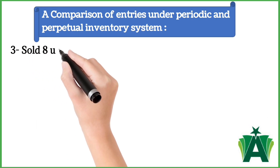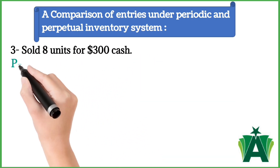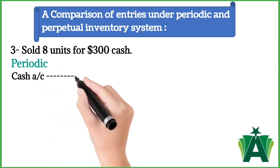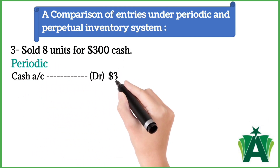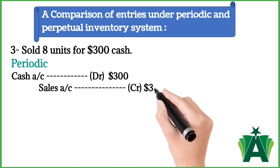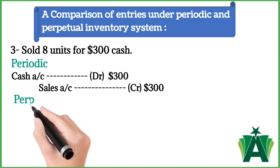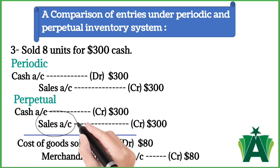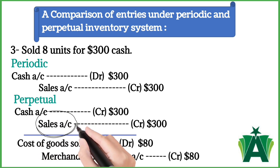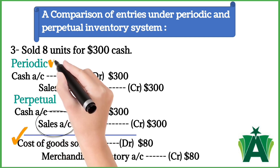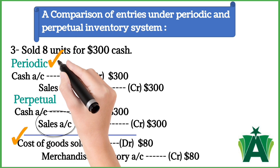Transaction 3: sold 8 units for $300 cash. Journal entry will be: Cash account debit $300, because asset increases in the business. Sales account credit with the same amount, because revenue increases in the business. The perpetual system requires two entries to record the sale: one to record the revenue, and another to record cost of goods sold. The perpetual system uses a Cost of Goods Sold account. In the periodic system, the elements of cost of goods sold are not transferred to such an account.